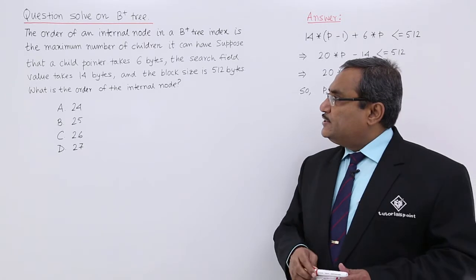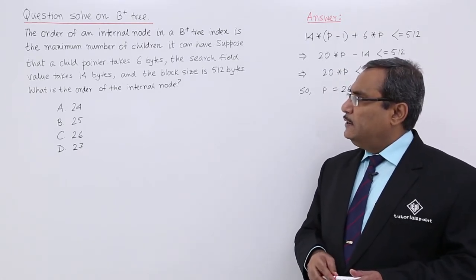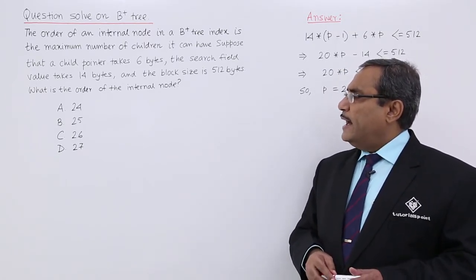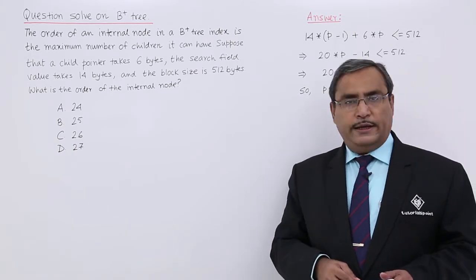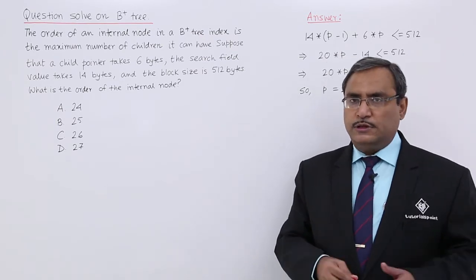Suppose that a child pointer takes 6 bytes, the search field value takes 14 bytes, and the block size is 512 bytes. What is the order of the internal node? That is the question for us.